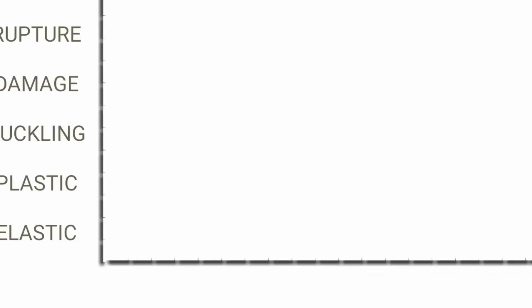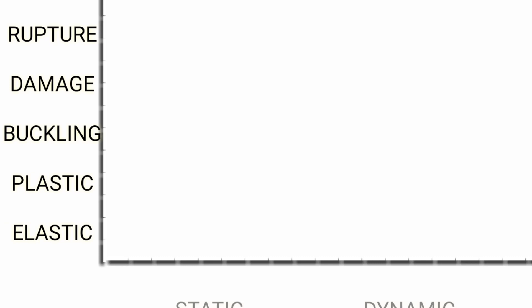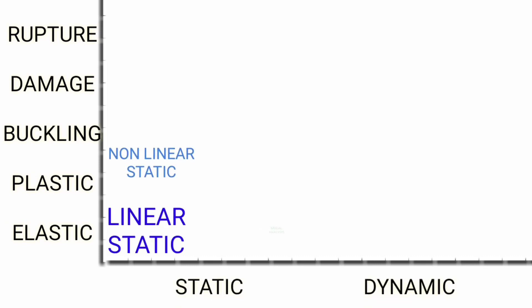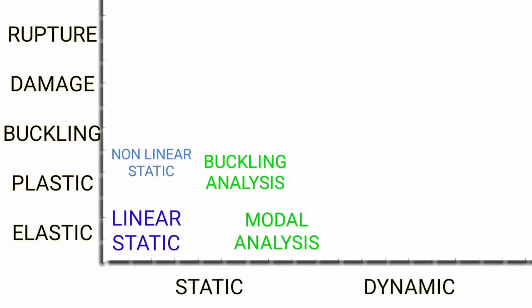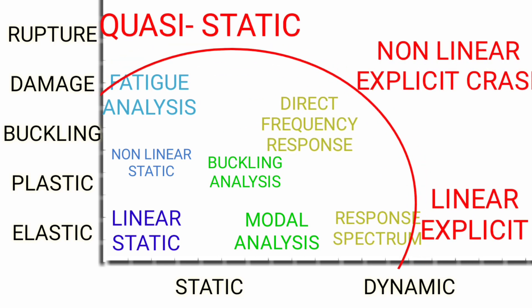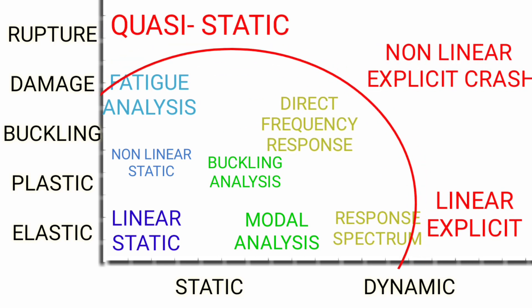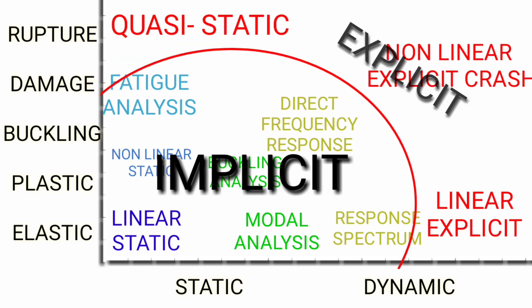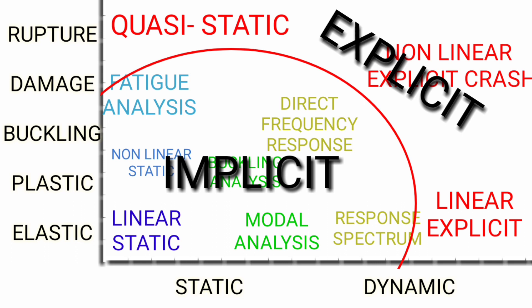There are many kinds of analysis under these two categories. I have plotted material definitions on the y-axis and time on the x-axis. Analyses having less material complexity and static nature fall under the implicit category, and the rest under explicit.